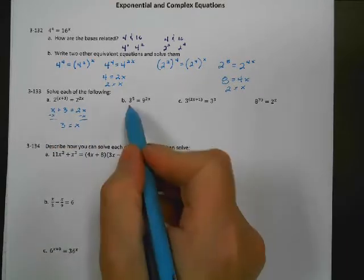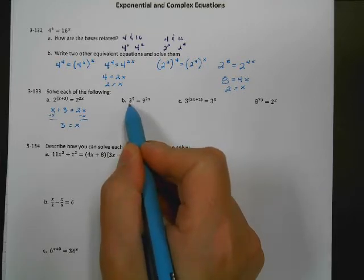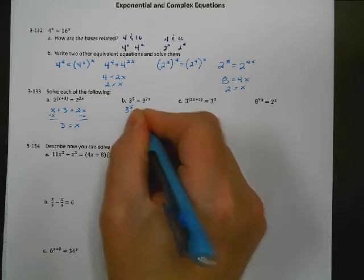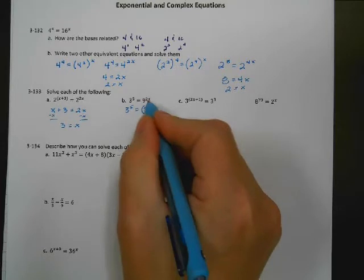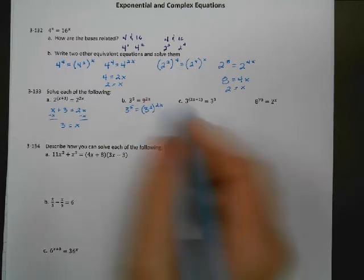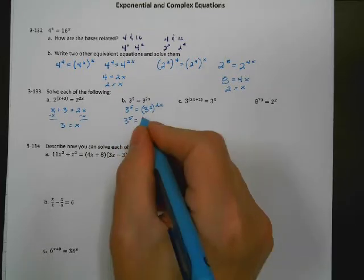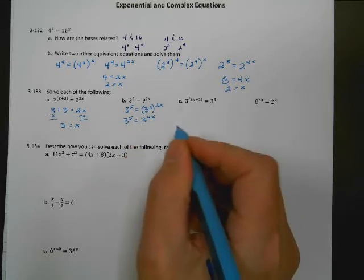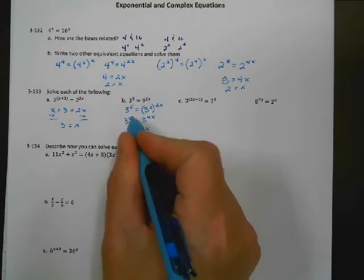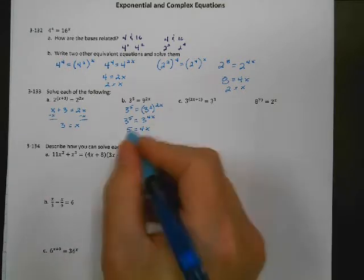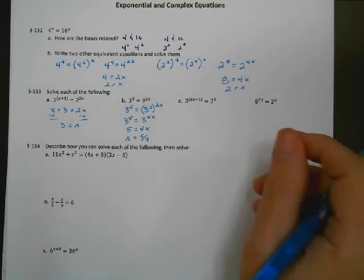Over here the bases are not the same, but 9 is a power of 3. So the 3 stays the same, but the 9 becomes 3 to the 2nd power raised to the 2x. So I've got 3 to the 5th equals 3 to the 2 times 2x, which is 3 to the 4x. Since the bases are the same, the exponents must be equal, so 5 equals 4x. Dividing by 4, x equals 5 over 4, or 1.25.